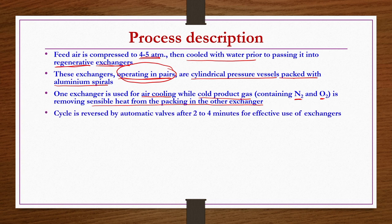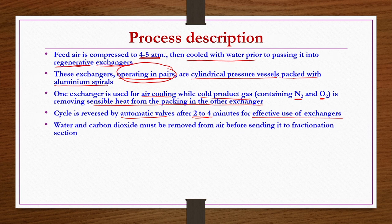These cycles are reversed by automatic valves after 2 to 4 minutes depending on the plant, for effective use of exchangers. First, exchanger 1 is used for air cooling and exchanger 2 is used for removing sensible heat from the packing material. After reversing, exchanger 1 is used for removing sensible heat and exchanger 2 is used for air cooling, since both have aluminum spiral packing and are designed this way.